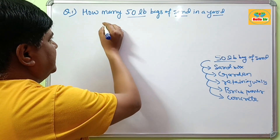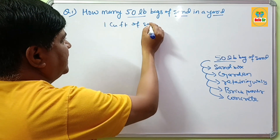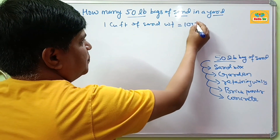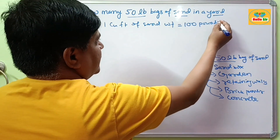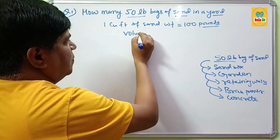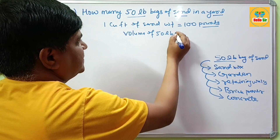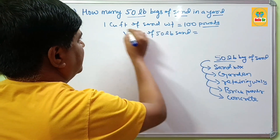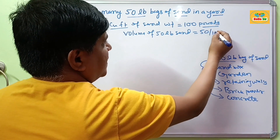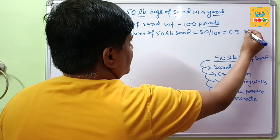To calculate this, you need to know that 1 cubic foot of sand weighs about 100 pounds. So the volume of a 50 lb bag of sand in cubic feet is 50 divided by 100, which comes out to 0.5 cubic feet.